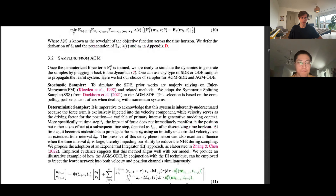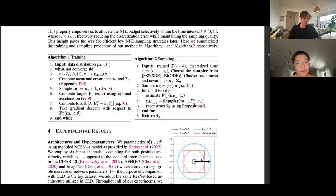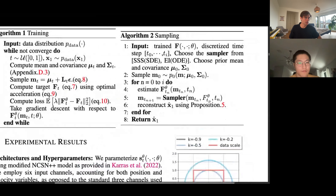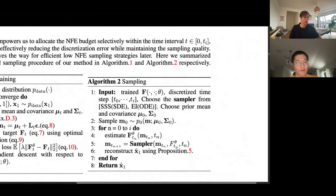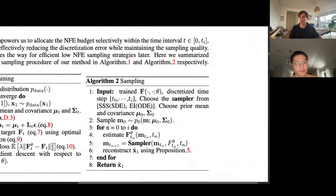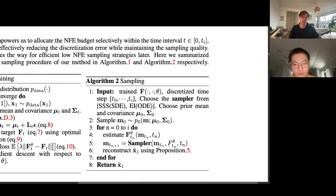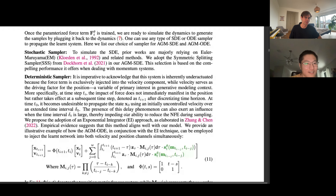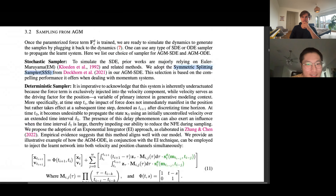Let's talk about the sampling algorithms. We can discuss the samplers — the choices we have and why we select the particular ones listed here. For the SSS — the Symmetric Splitting Sampler — the reason for choosing it is that it is effective. It comes from previous work. The concept is: so long as your dynamics is linear, you can write down the analytic solution.